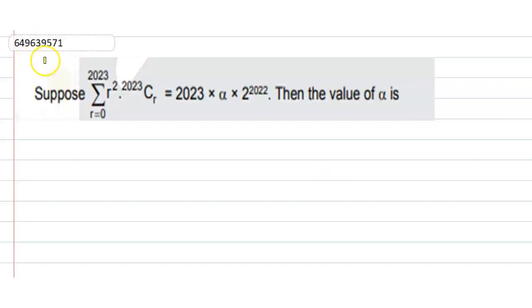Hello students, we are given a question here. Suppose sigma r equals 0 to 2023, r square times 2023 C_r is equal to 2023 times alpha times 2 to the power 2022. Then the value of alpha is?